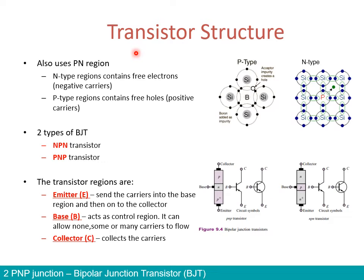Now, in order to understand how a transistor works, let's go inside the transistor to look at its structure. As mentioned before, it uses P-N regions just like in a diode. As a reminder: N-type regions are the regions that contain free electrons, which we call negative carriers. And P-type regions contain free holes, which we also call positive carriers.